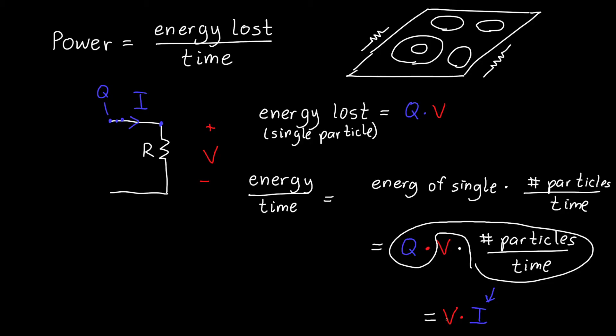And now this expression will always work, this is always the power dissipated. But usually we only know one thing, so usually we only know the voltage or we only know the current. But fortunately, for a resistor, we can use Ohm's law to simplify this expression. And Ohm's law, remember, just says that the voltage across the resistor is equal to the current through the resistor times the resistance.